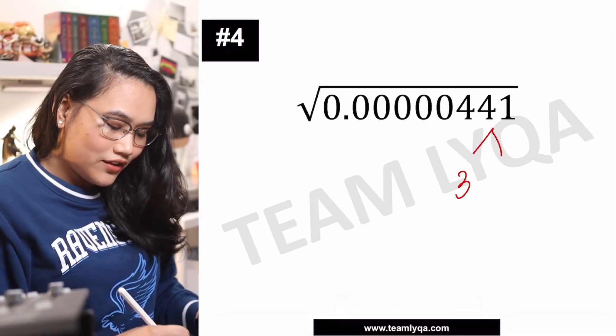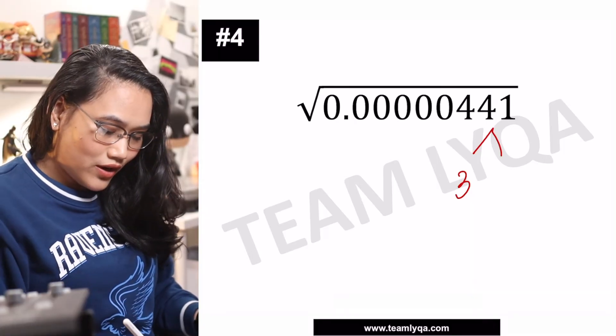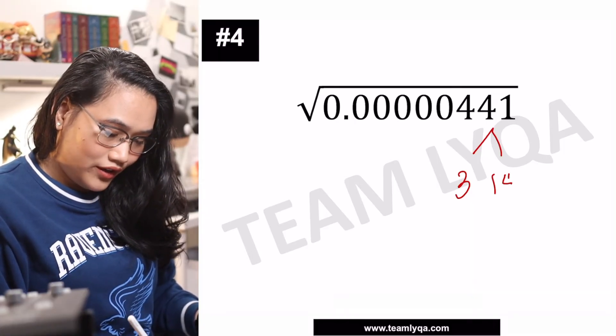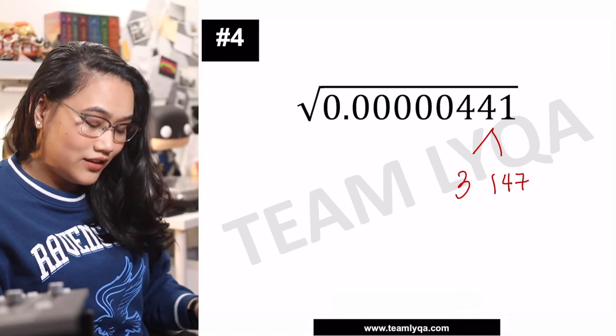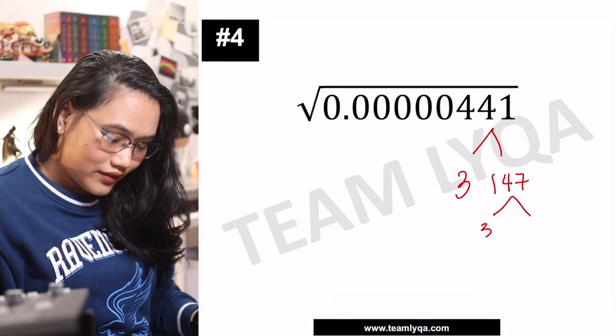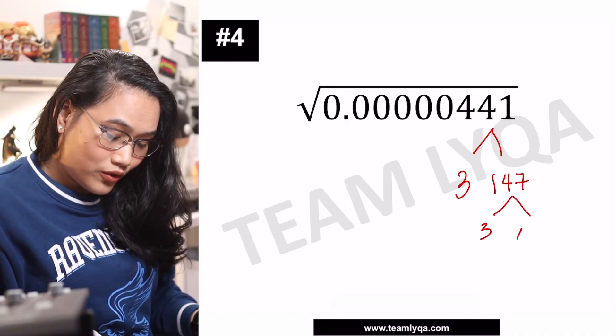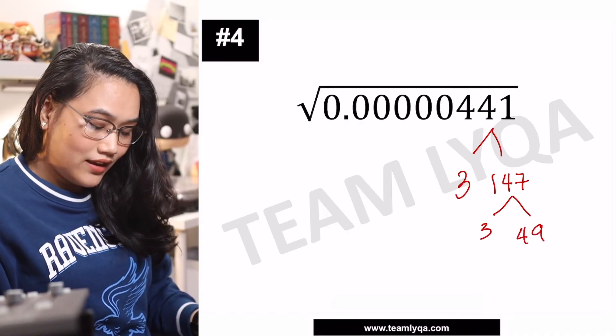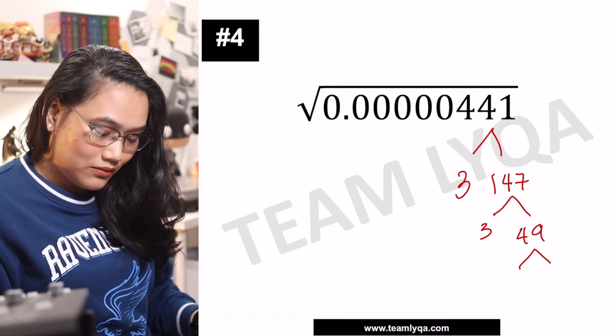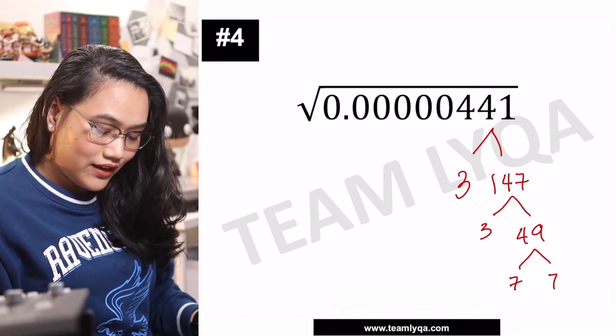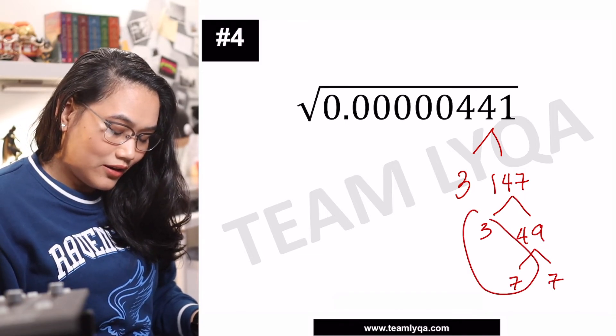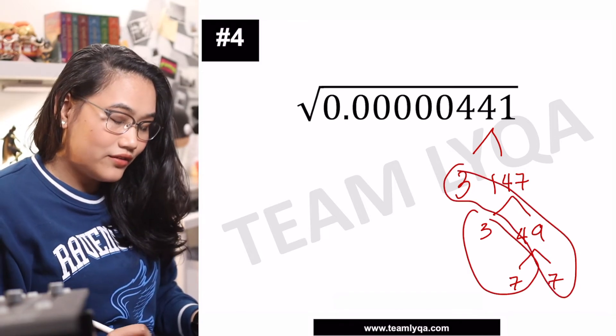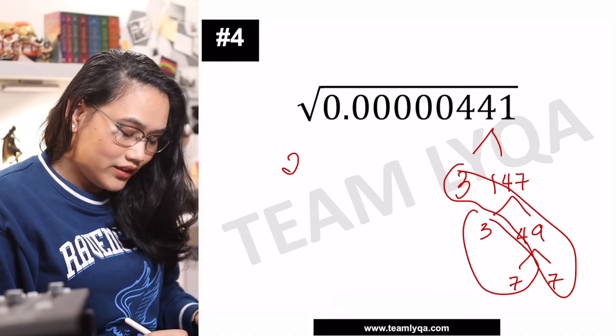So 3, let's start with 3. We'll divide 441 by 3. You have 1 and then you have 4 and then you have 7. This is still divisible by 3. This is going to give you 4 and 9. 49 is divisible by 7 and 7. 7 times 7 is 49. Which means our number inside is 3 times 7 or 21.